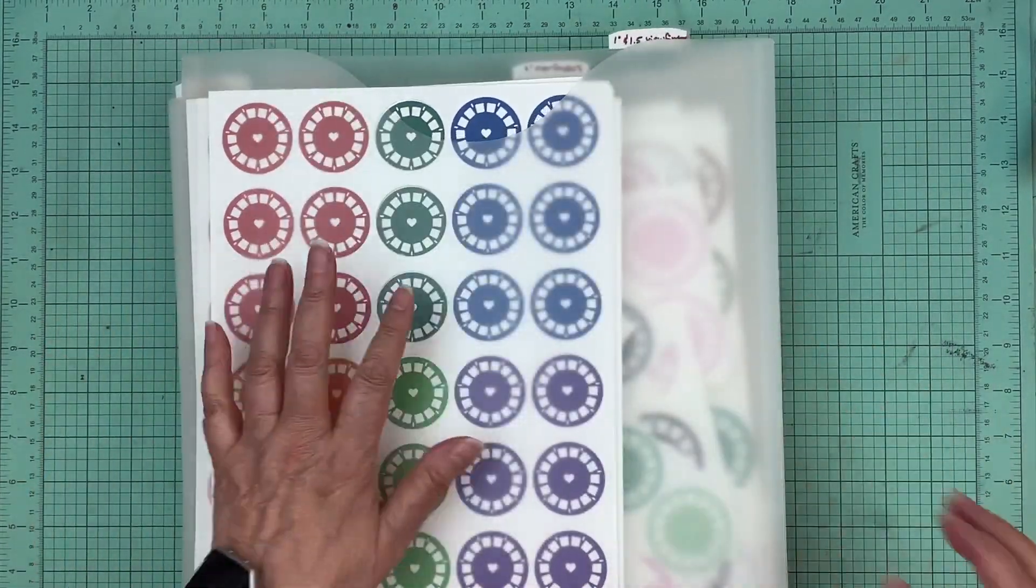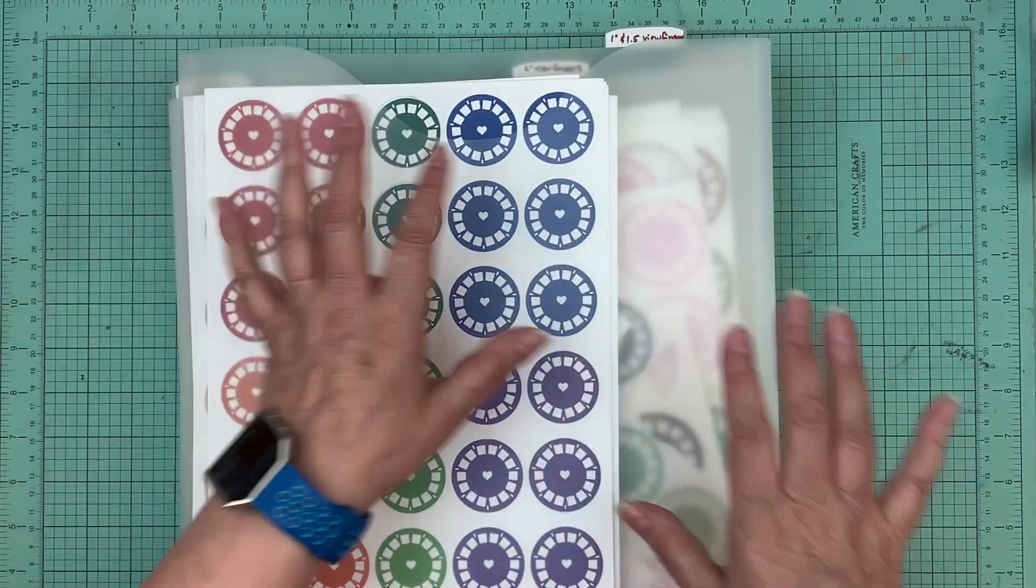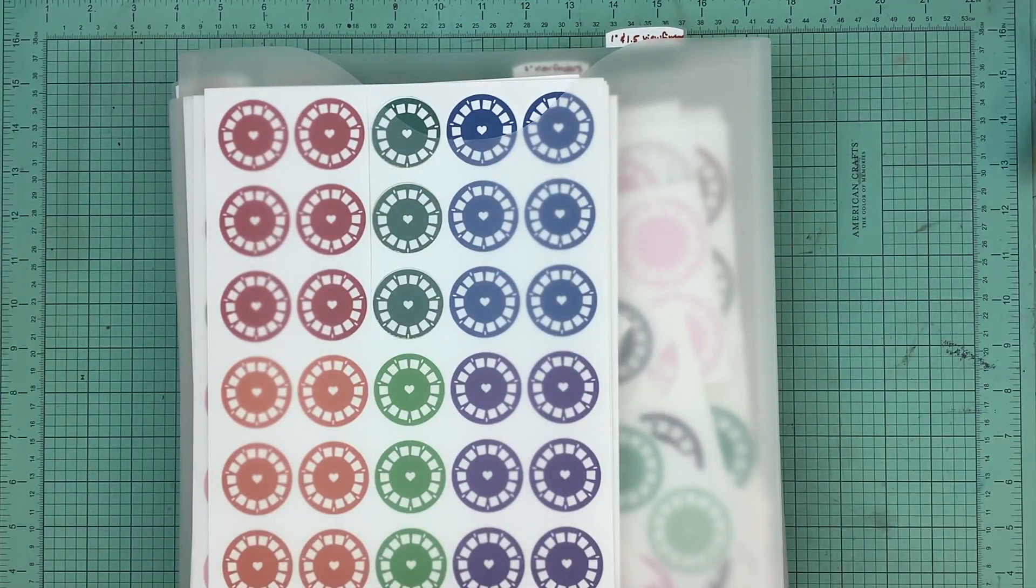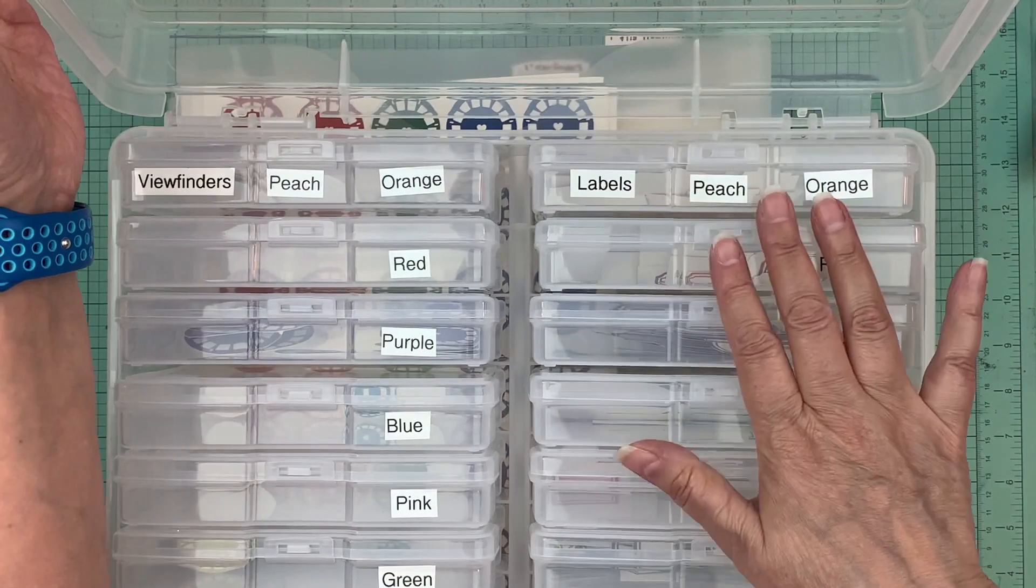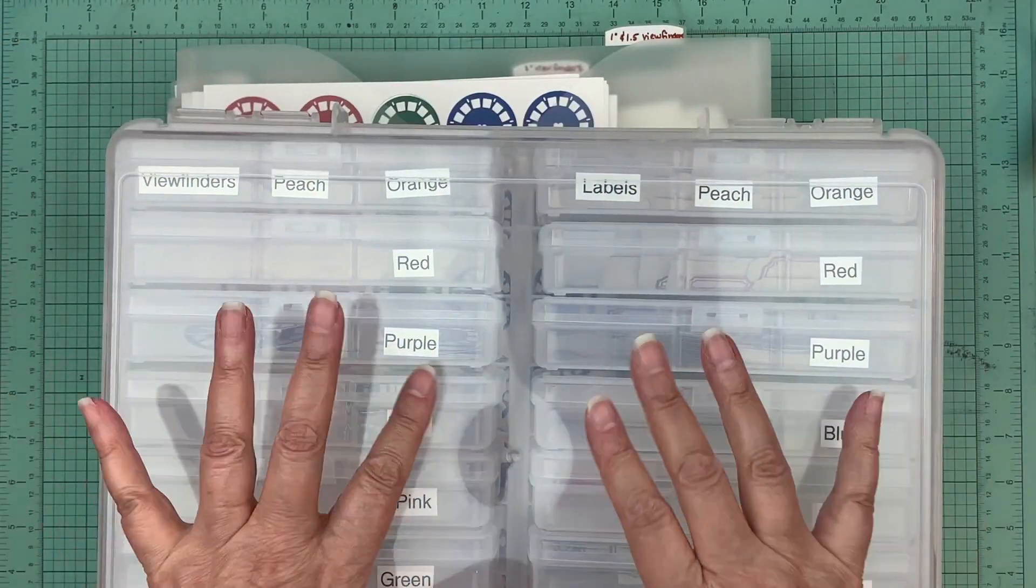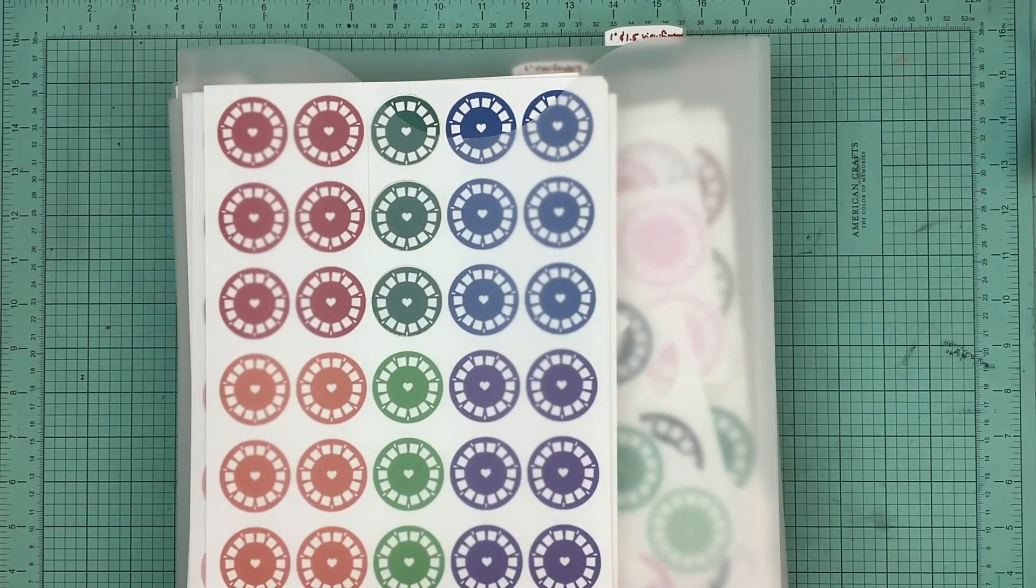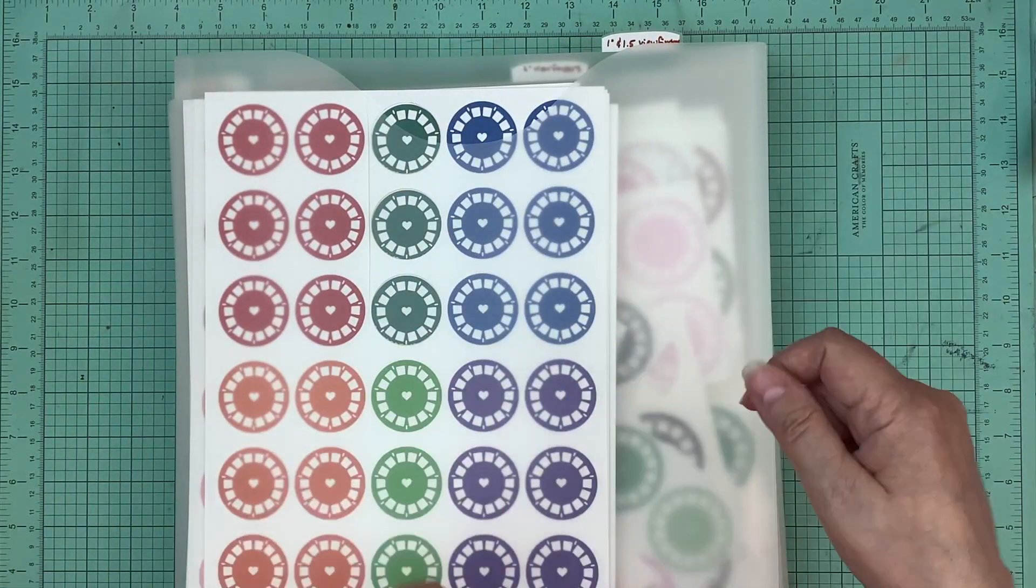I have these here just until I have them all cut out and then put them separately in this container like I showed the last time. I have these separated by color for labels and viewfinders until I can get them into here.